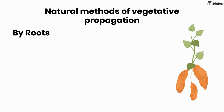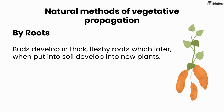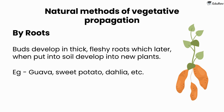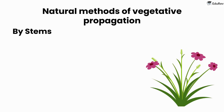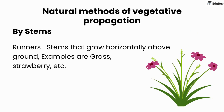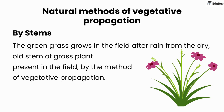By roots: buds develop in thick, fleshy roots which, when put into soil, develop into new plants. Examples include guava, sweet potato, dahlia, etc. By stems — runners: stems that grow horizontally above ground, examples are grass, strawberry, etc. The green grass grows in the field after rain from the dry, old stem of the grass plant present in the field, by the method of vegetative propagation.